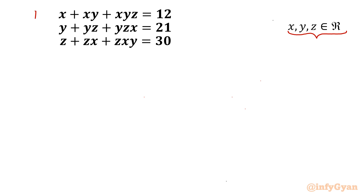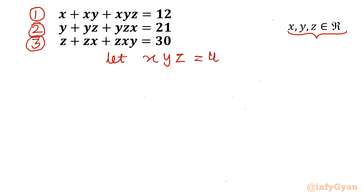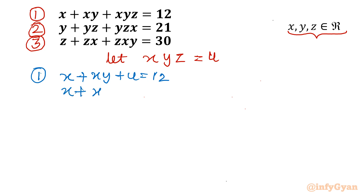Let's get started by writing equations number 1, 2, and 3. I will consider our substitution straightaway. Let us write xyz equal to u. Now I will frame our equations in terms of u. Equation 1 we can write as: x plus xy plus u equal to 12, or we can write x plus xy equal to 12 minus u.